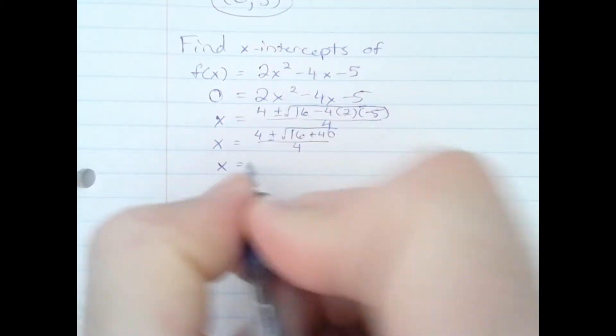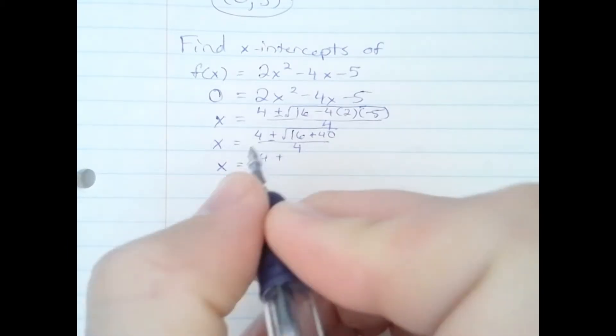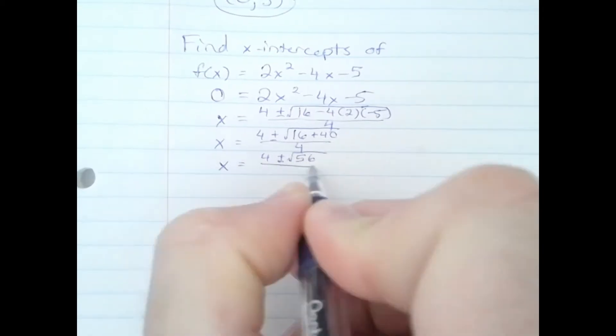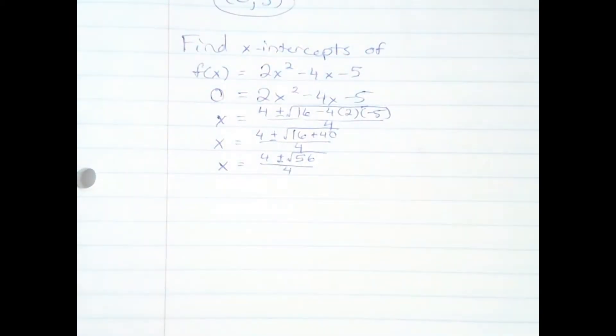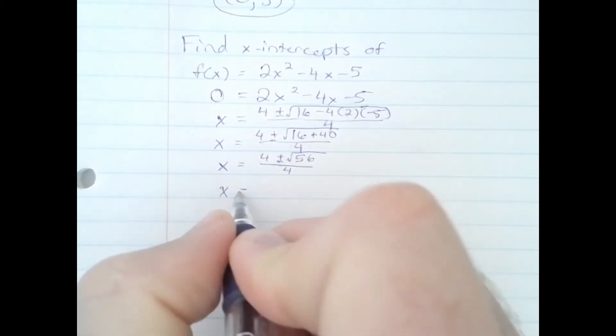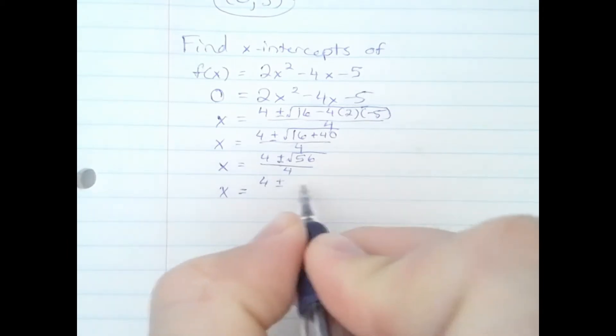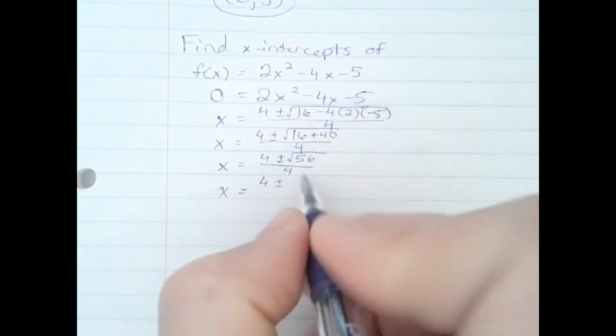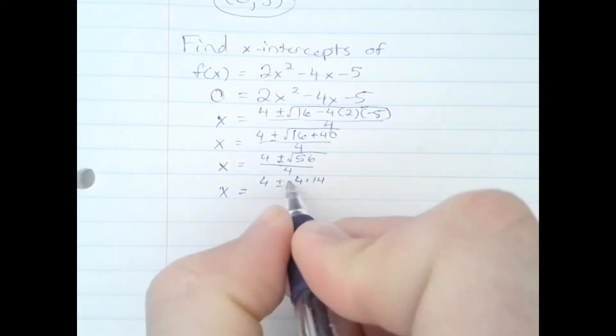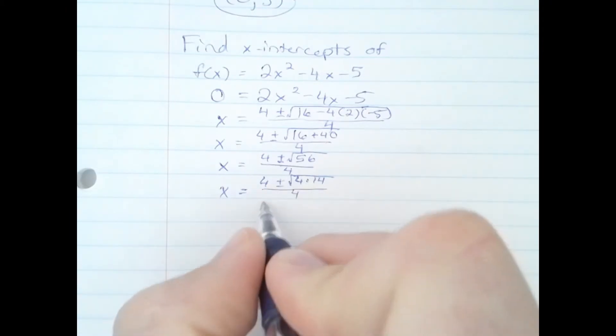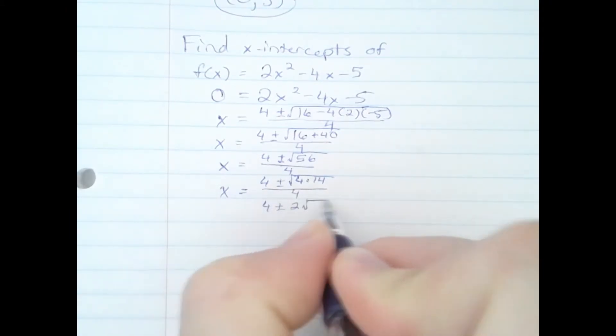And then next step, we have 4 plus or minus the square root of 56 all over 4. x equals 4 plus or minus... Now we need to break 56 down. The factors are 4 and 14. I choose those because 4 is the largest perfect square factor. The square root of 4 is 2, which I will put on the outside. 2 radical 14.